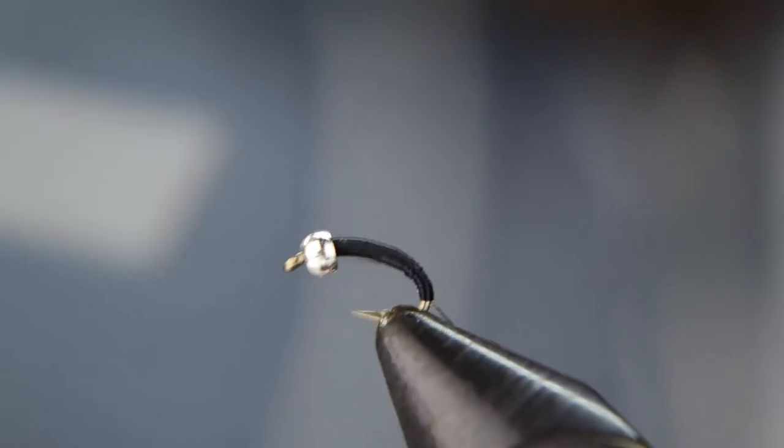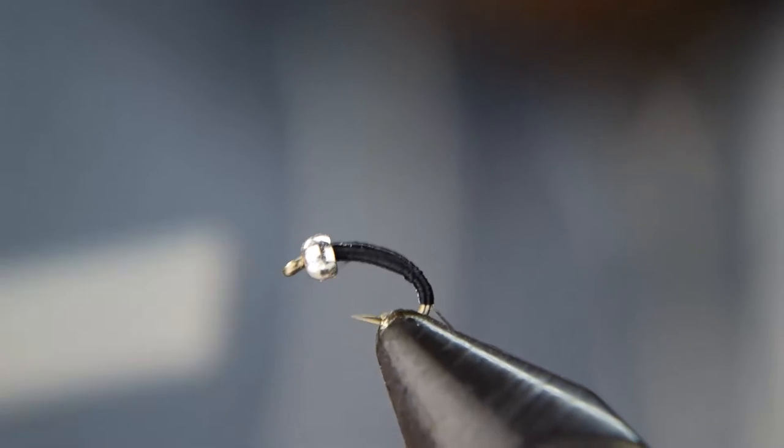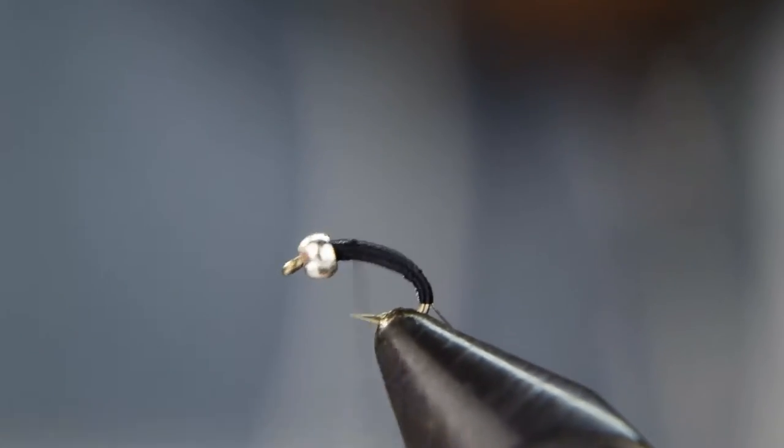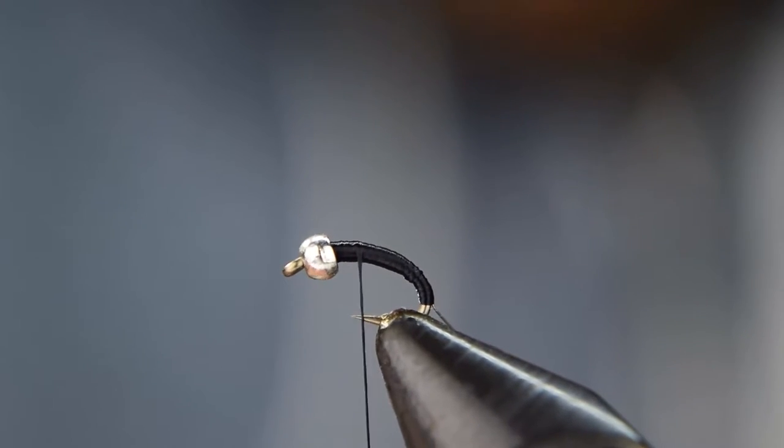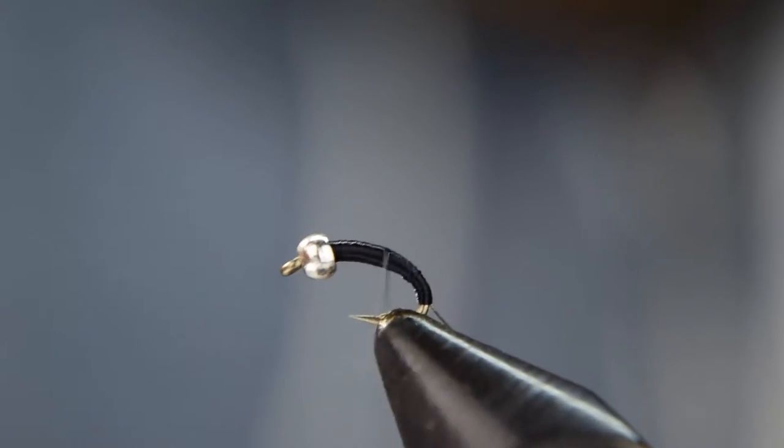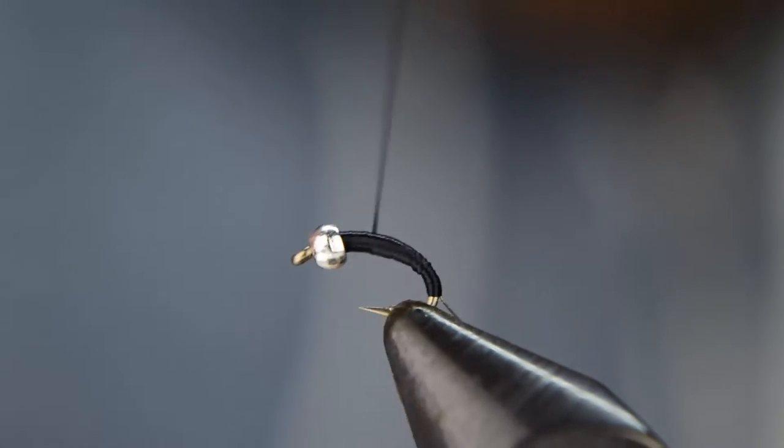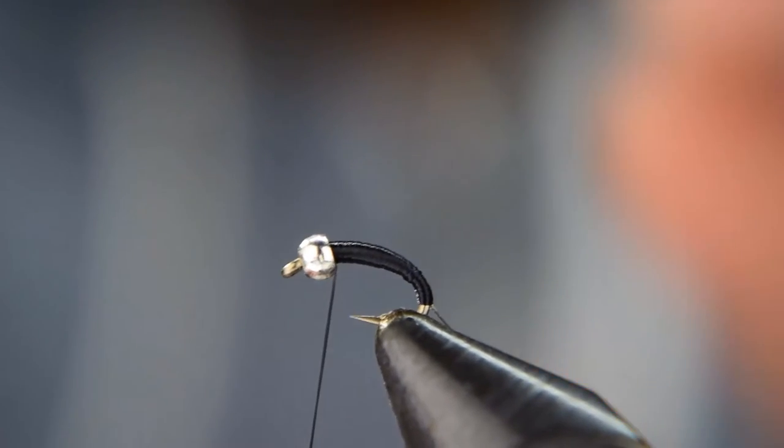You don't want to wrap all the way down every time, you just want to wrap down just enough to get that body started and get that body tapered. We're going to get back down for the last time here. We're going to spin that bobbin and flatten out the thread, go back to right about there and then come back up. That should be good enough.